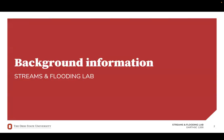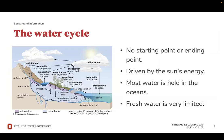First, we'll start with some background information to provide context for this week's lab. The water cycle, also known as the hydrologic cycle, is the continuous movement of water on, above, and below the surface of Earth. This cycle is essential for sustaining life on our planet, influencing weather patterns, climate, and the overall environment. Understanding the water cycle is fundamental in Earth sciences and is crucial for the study of streams, flooding, and water resource management.